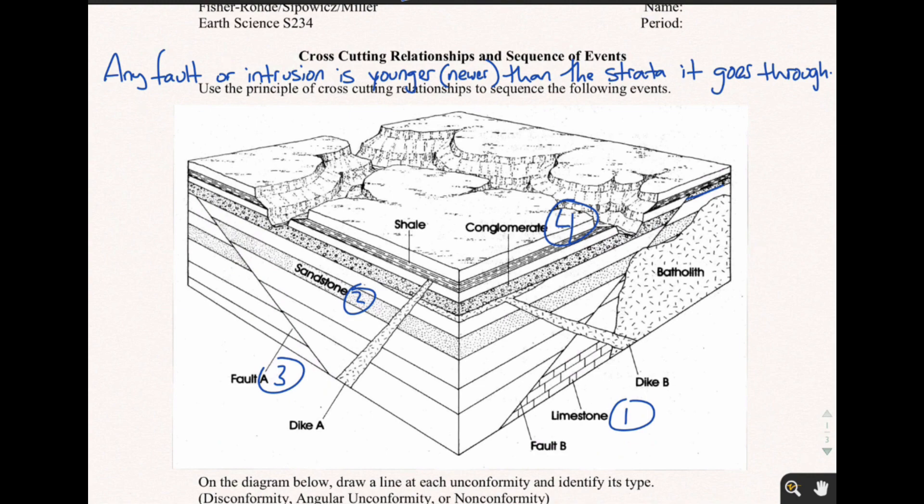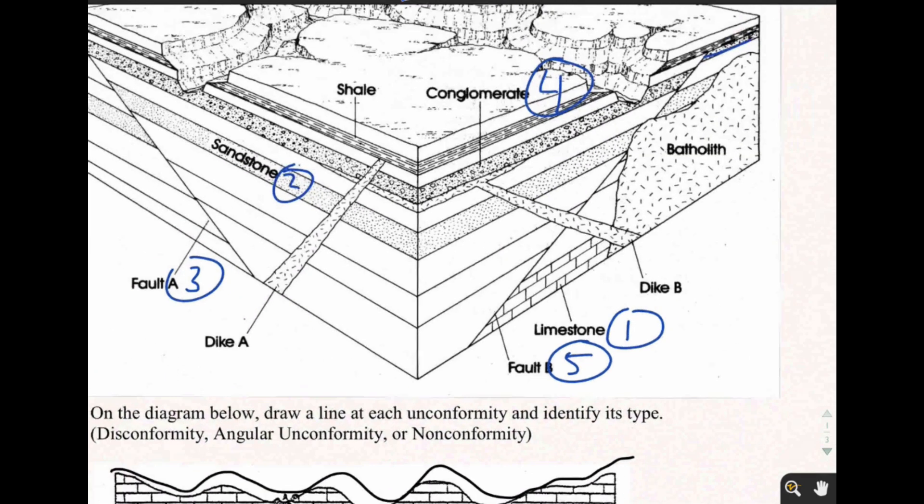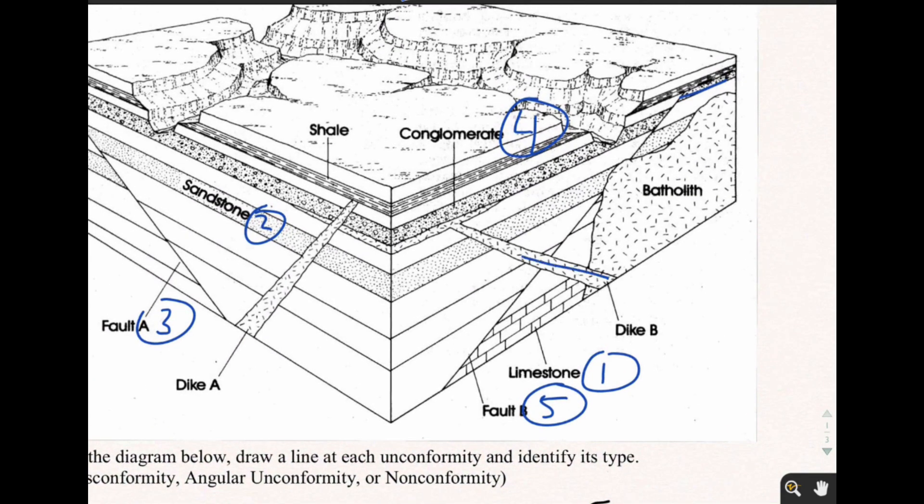What's number five? Number five has to be Fault B. Number five is Fault B because if you'll notice, Dike B goes on top of it. So it can't be Dike B.